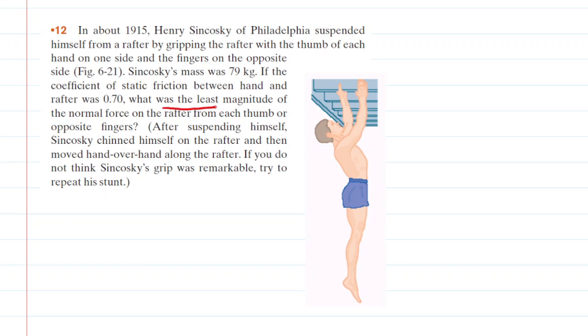In this question we have to determine the least magnitude of the normal force on the rafter from each thumb or opposite finger. So in order to do that we're going to zoom in on the hands of this stuntman and take a look at the forces that are acting on his thumb and opposite finger.